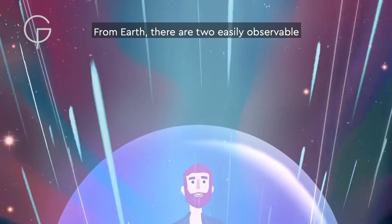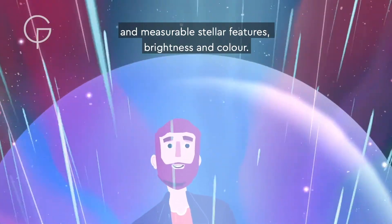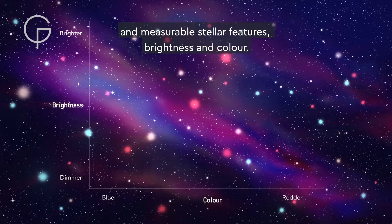From Earth, there are two easily observable and measurable stellar features: brightness and colour.